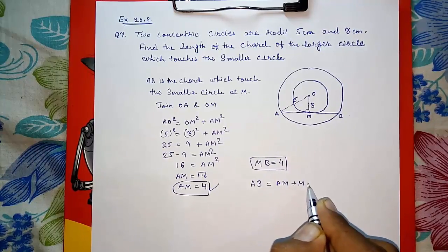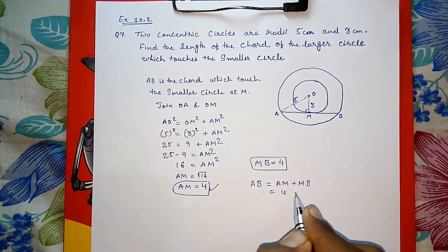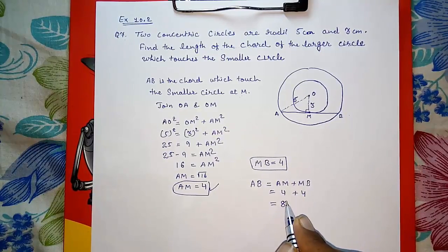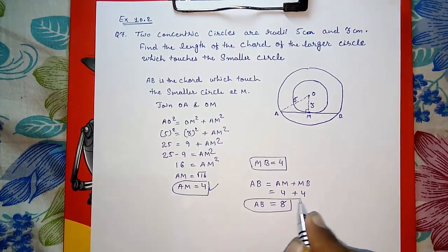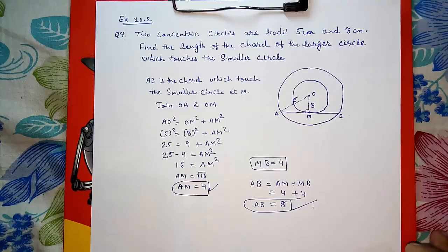So AB is equal to AM plus MB, that is 4 plus 4 equals 8. So AB will be 8 centimeters. So this way we can solve this sum.